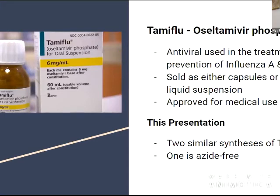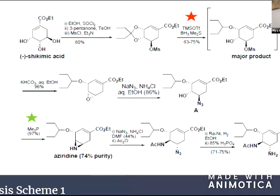So Beth and I did the syntheses of Tamiflu from shikimic acid. Essentially what Tamiflu is, it's oseltamivir phosphate, and it's an antiviral drug using the treatment or prevention of influenza. It can either be sold in capsule form or as a liquid suspensions for babies. It was approved for medical use in 1999. In this presentation we're going to be comparing two similar syntheses of Tamiflu, and one is azide-free, probably just because azide can be very toxic.